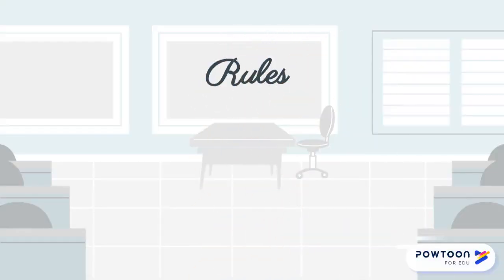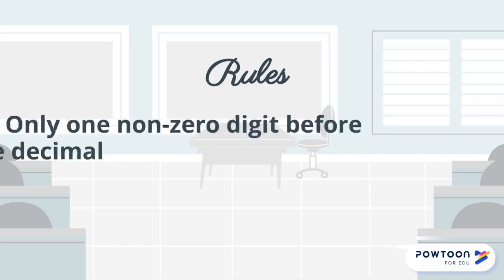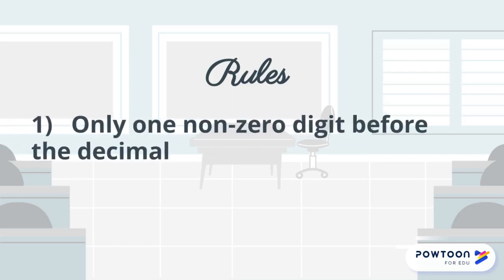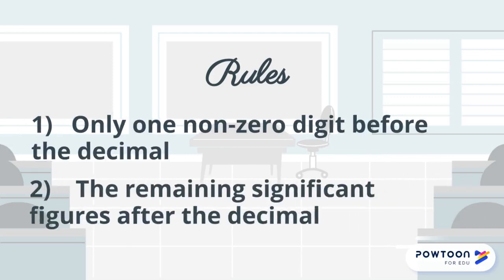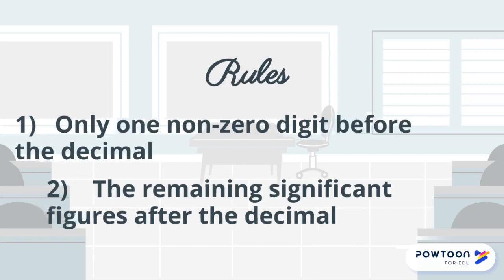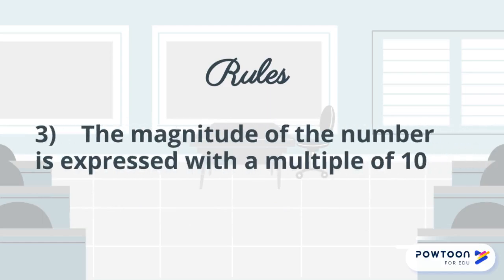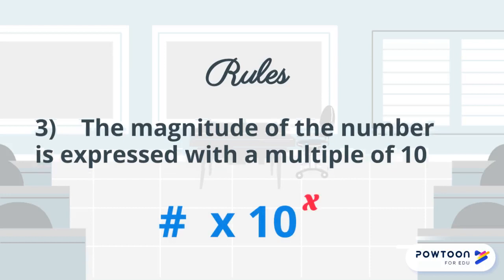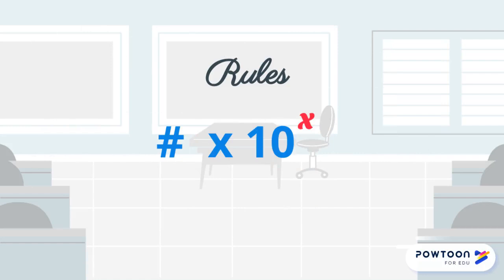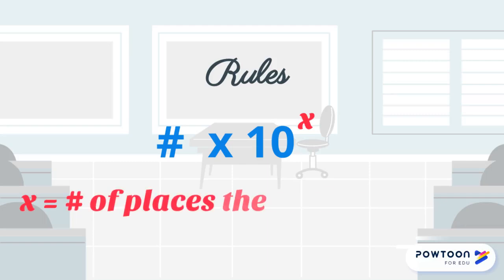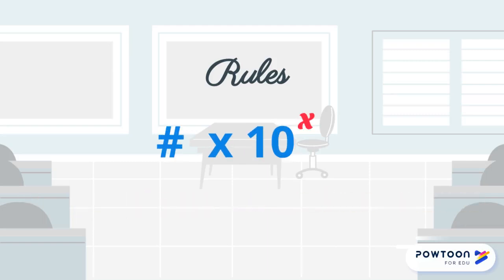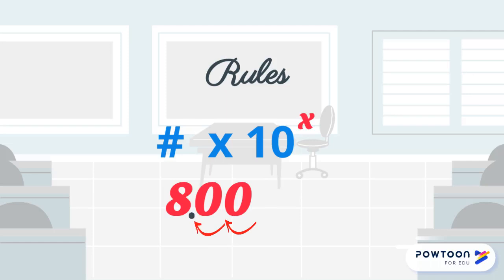You should know a few simple rules for writing a number in scientific notation. First, only one non-zero digit comes before the decimal. Second, the rest of the significant figures are after the decimal. If you need help with significant figures, search our other videos for this topic. Finally, the magnitude of the number is expressed with a multiple of 10, represented as times 10 to some integer exponent. Since we're multiplying by 10s, the order of magnitude, or the exponent, is equal to the number of places the decimal moves.